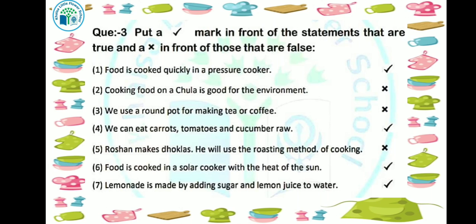Next: we can eat carrots, tomatoes and cucumbers raw. Yes — raw means kaccha. We can eat carrot, tomato and cucumber raw. This sentence is true, because we eat tomato, cucumber and carrot raw in salad as well.